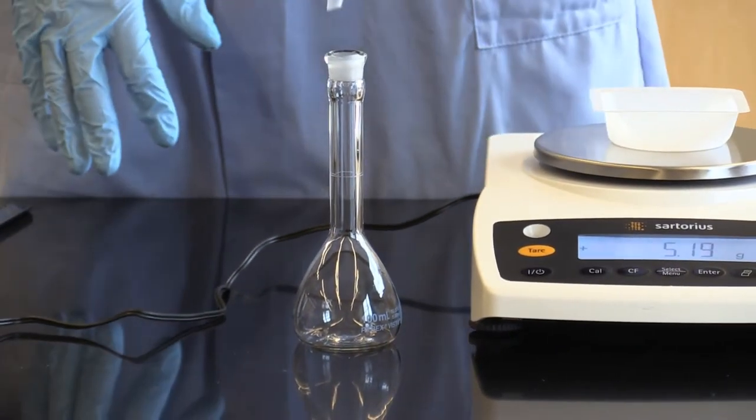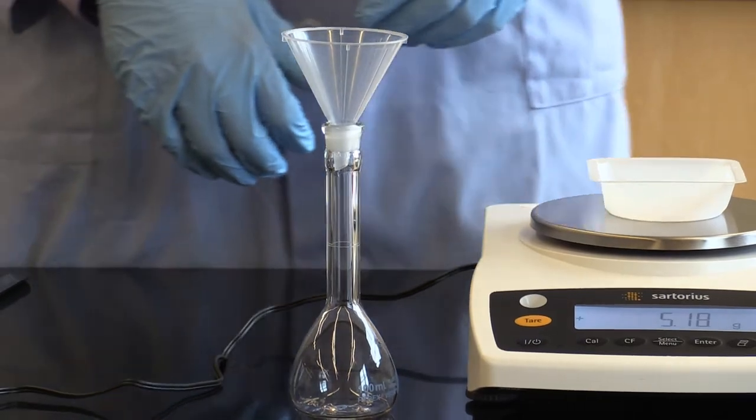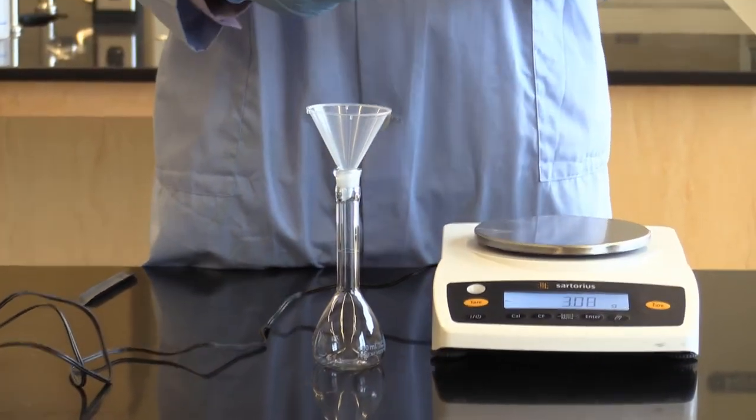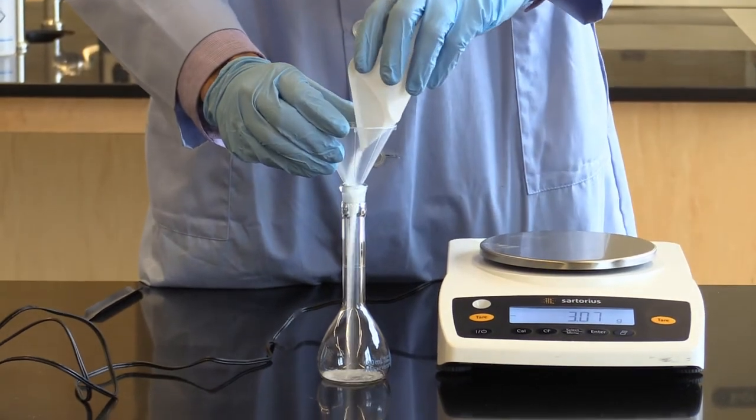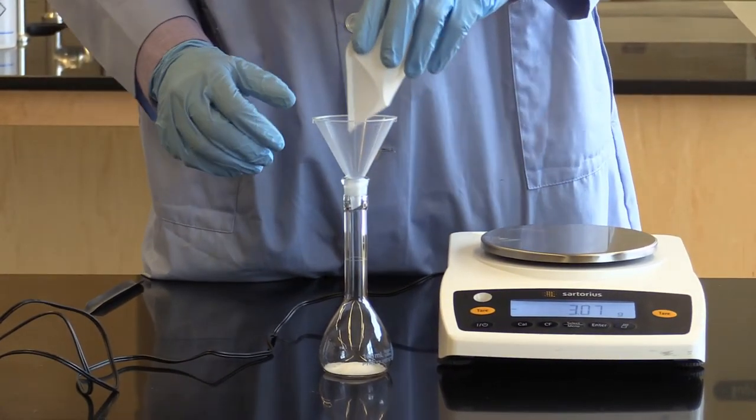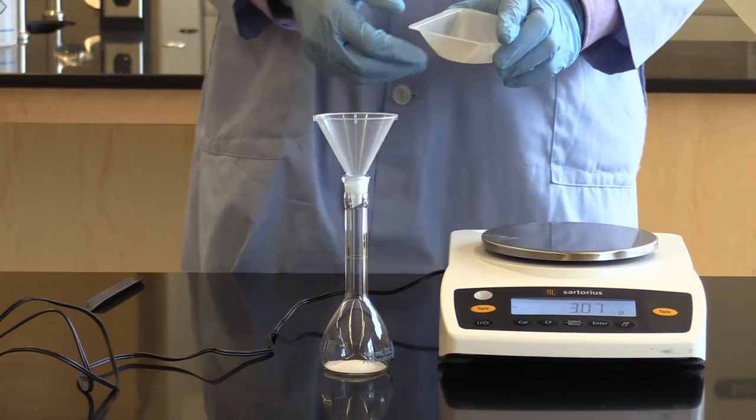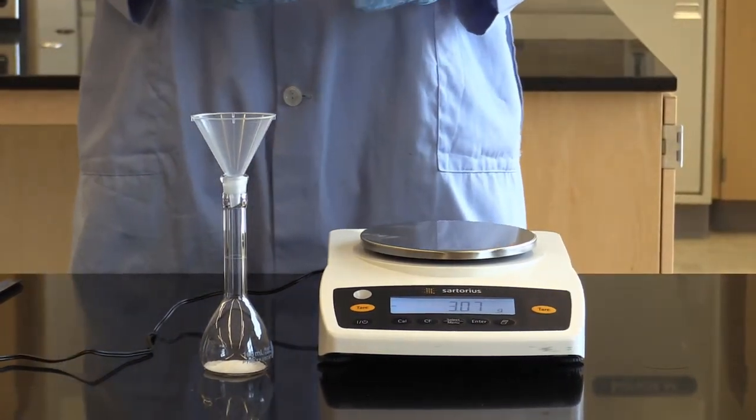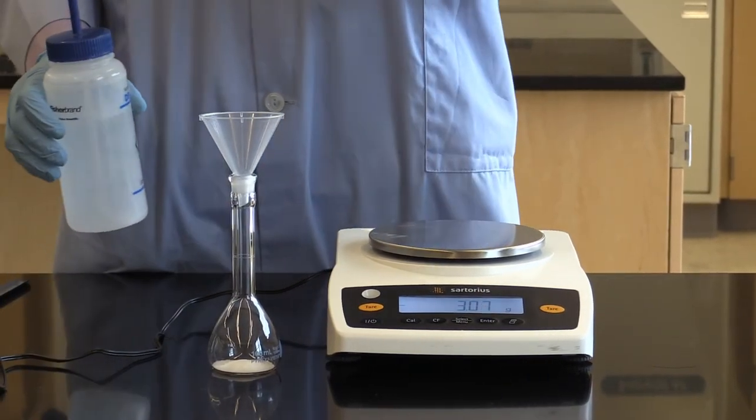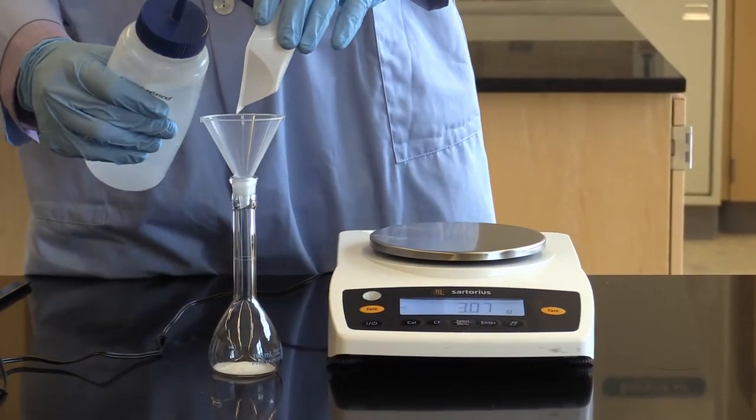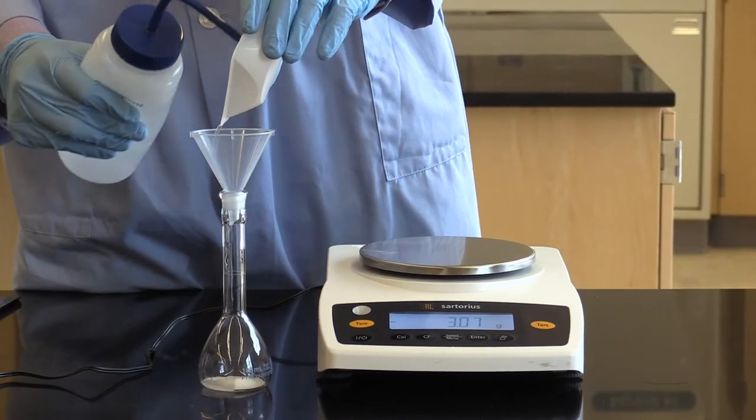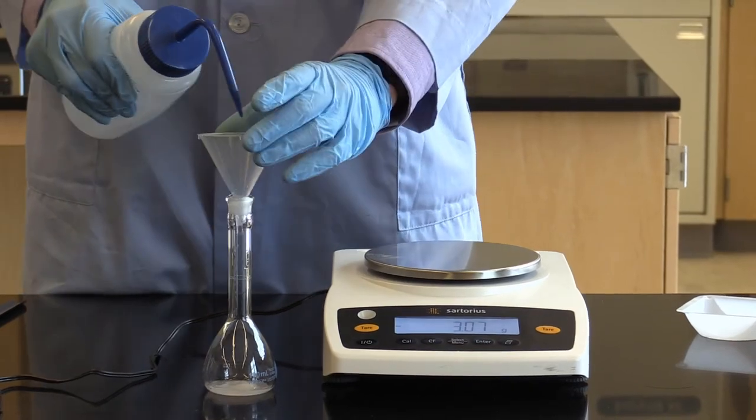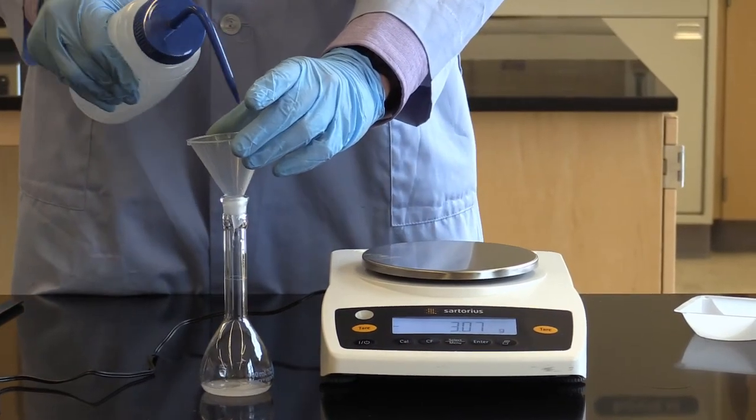So we're then going to place a funnel on top of the flask, and then we are going to pour our sucrose in. Next what we want to do is dissolve the sucrose before bringing it up to 100 mils. So to make sure I got all the sucrose off the weigh boat, I'm going to wet the weigh boat. I'm then going to wet the funnel just to make sure I get all that sucrose in.